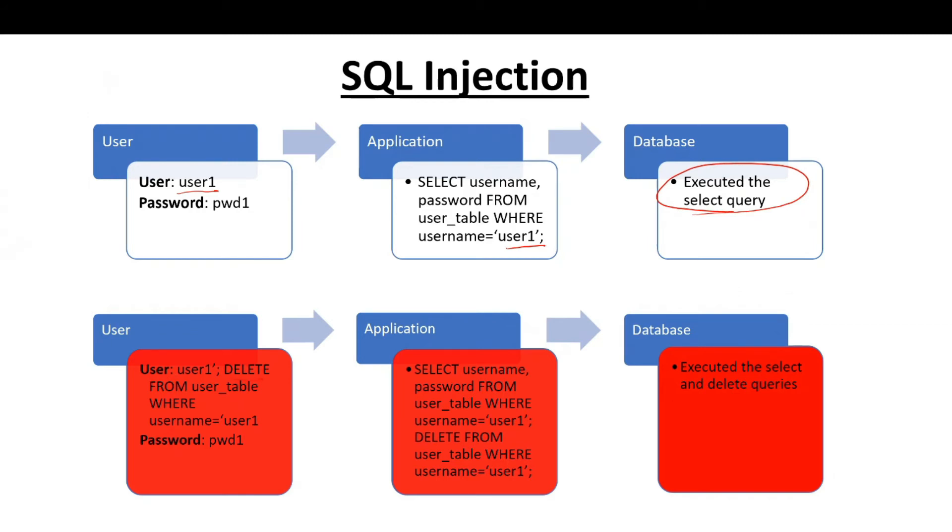So what happens in an SQL injection attack? Instead of sending just the username like this, the user is sending the username as well as there is a delete operation. So the application will write this as a select query where username and password are selected from this table and then there is also a delete operation where the username is user one. So the database executes both select and delete. It is deleting the entire row with which belongs to user one. This is an SQL injection attack where the data is deleted.